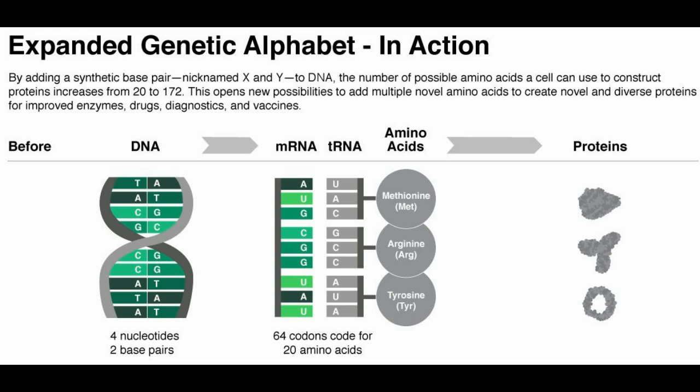As you can see before: A, T, G, and C — four nucleotides, two base pairs. The RNA does its thing — 64 codons for 20 amino acids. Then the amino acids make your proteins. In every organism on this planet, every form of life that we know of, this is what it is.